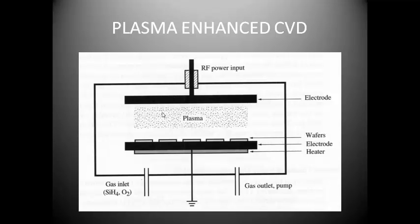This is the plasma enhanced CVD diagram which explains very well about CVD. In this we can see that there are two electrodes — one electrode is generating plasma and another electrode is considered as the workpiece or the wafers on which the CVD process is going to take place. There are some gas inlets provided for gases which are useful for deposition of the CVD process on the surface of the workpiece.